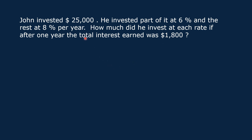According to the problem, the total amount invested by John was $25,000. Part of it was invested at 6% and the rest at 8%. The total interest earned for one year was $1,800.